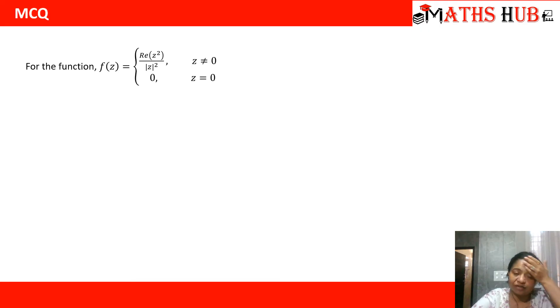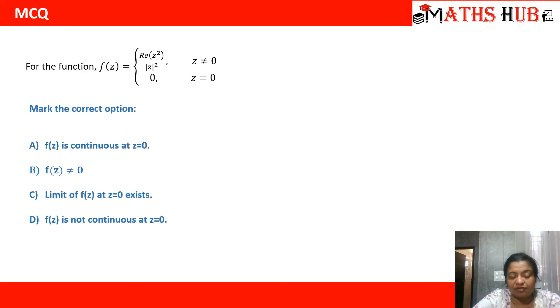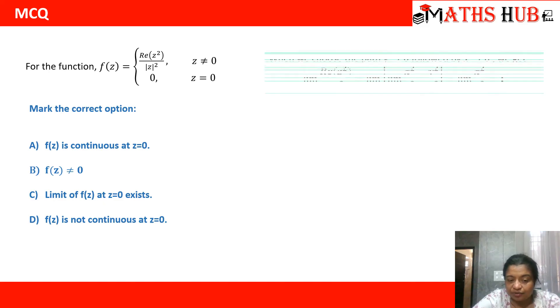Let us go to the next MCQ question. For the function f of z equal to the real part of z squared upon mod z squared, where z is not equal to 0, and equal to 0 when z equals 0, we again have to mark the correct option: f of z is continuous at z equal to 0; f of z is not equal to 0; limit of f of z at z equal to 0 exists; or f of z is not continuous at z equal to 0.